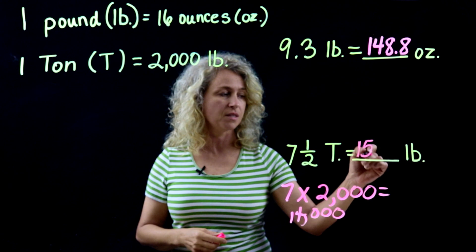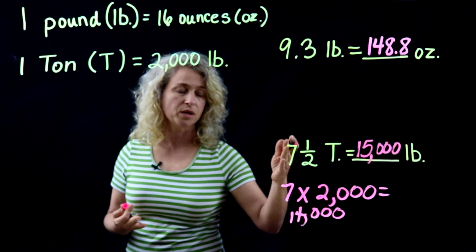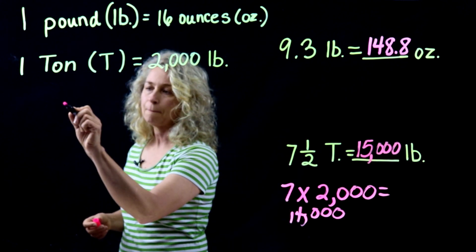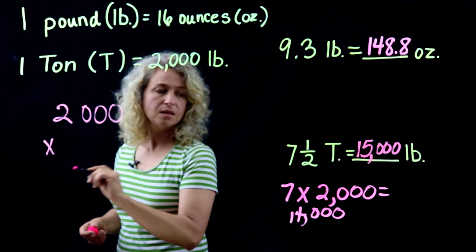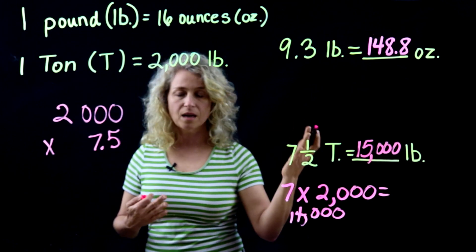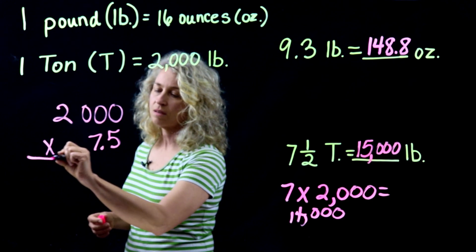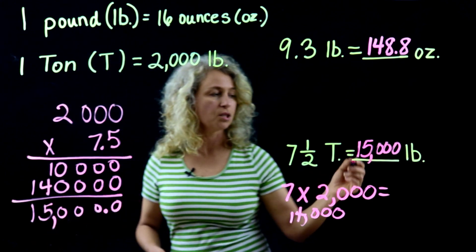You could multiply this out though if you wanted to. Change it and say 2,000 times 7.5, because 7 and a half is 7 and 5 tenths. And so you get the same answer.